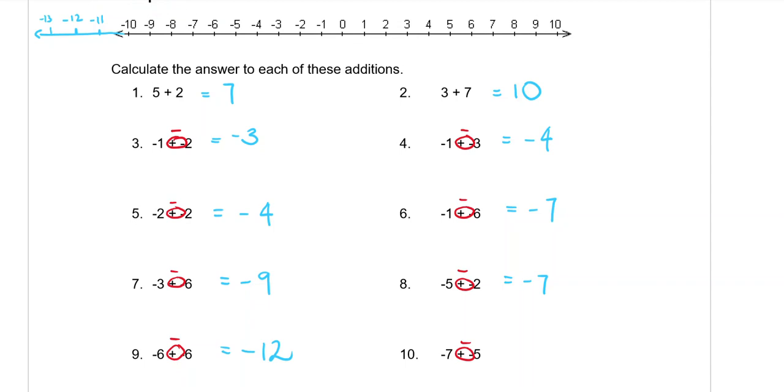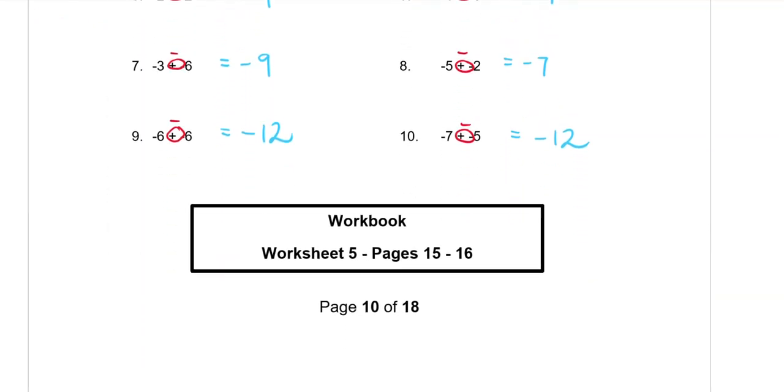Then question 10, we're starting at negative 7 and we want to go 5 places to the left: 1, 2, 3, 4, 5 which is also negative 12. Okay, so just remember all those plus minus signs are just the same as a minus sign. And you are going to do pages 15 and 16 of your workbook please.